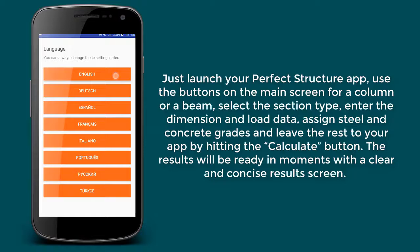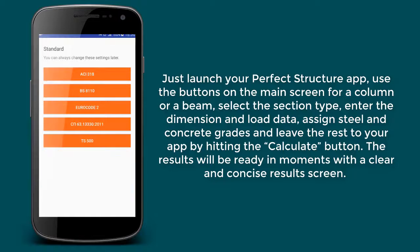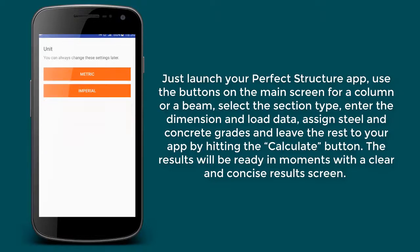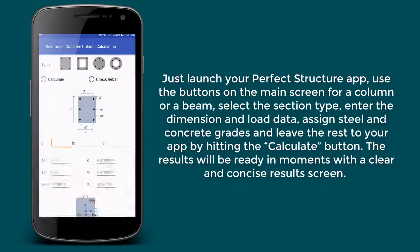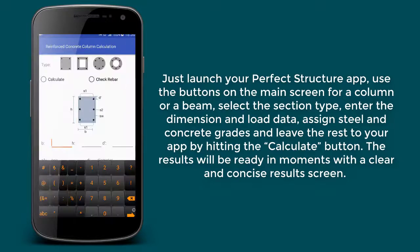Use the buttons on the main screen for a column or a beam. Select the section type, enter the dimension and load data, assign steel and concrete grades, and leave the rest to your app by hitting the Calculate button.